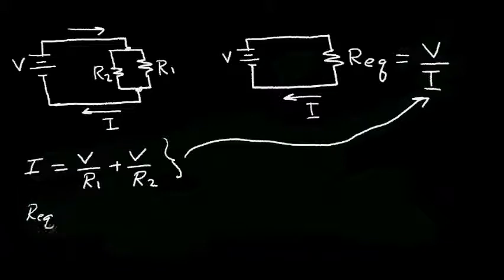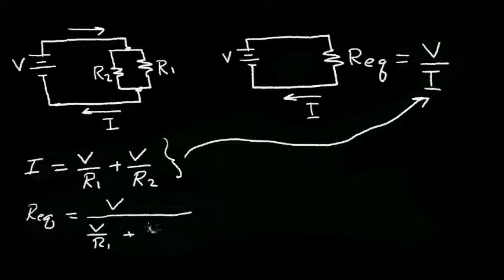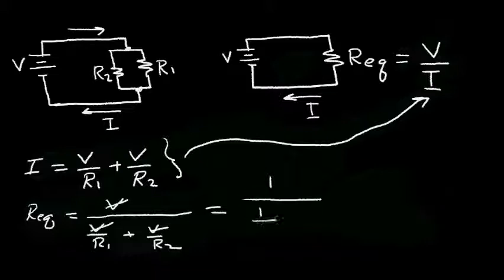We can substitute this expression into the equation for R Eq and solve. So R Eq is equal to the voltage divided by this current, which is V over (V over R1 plus V over R2). Notice that the voltage cancels, and I'm left with 1 divided by (1 over R1 plus 1 over R2).